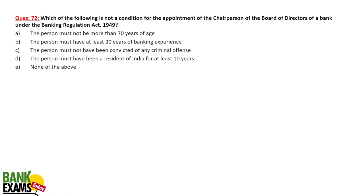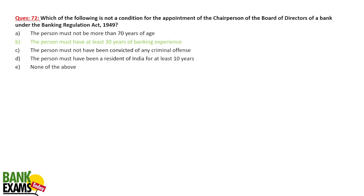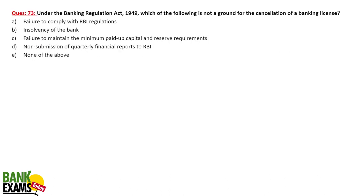Which of the following is NOT a condition for the appointment of the chairperson of the board of directors of a bank under the Banking Regulation Act 1949? The option stating '30 years of banking experience' is not a correct condition. The actual conditions include: the person must not be more than 70 years of age, must not have been convicted of any criminal offense, must have been a resident of India for at least 10 years, and must have at least 10 years of working experience in banking or the financial industry.